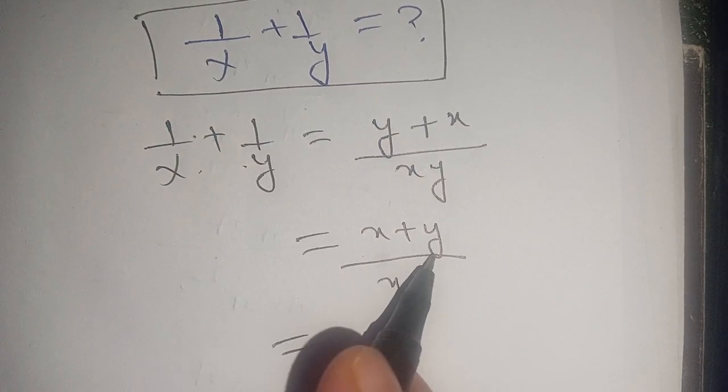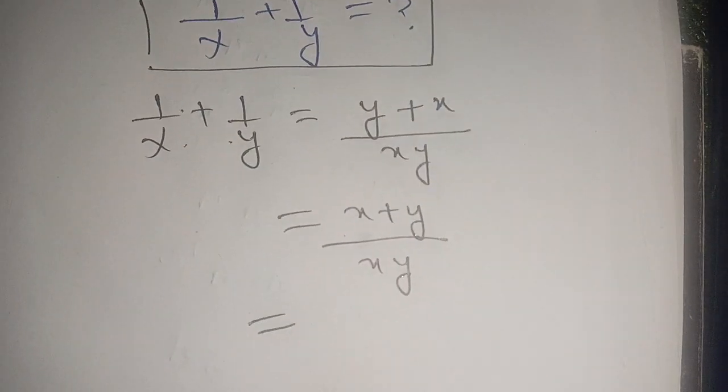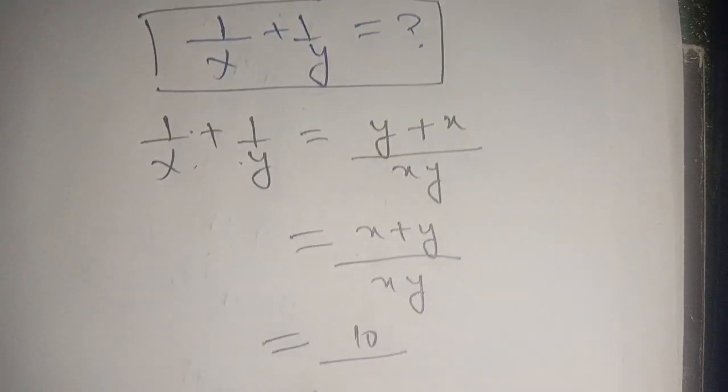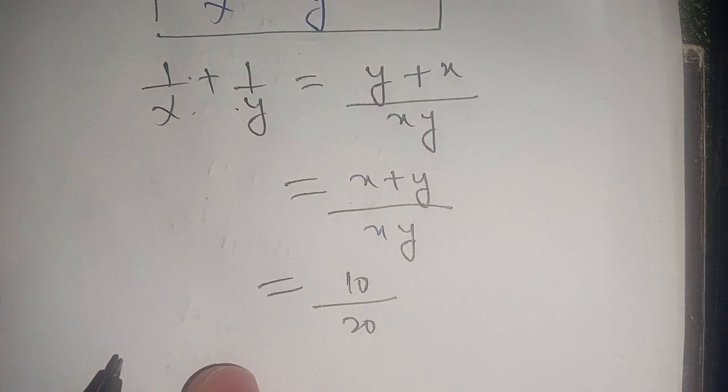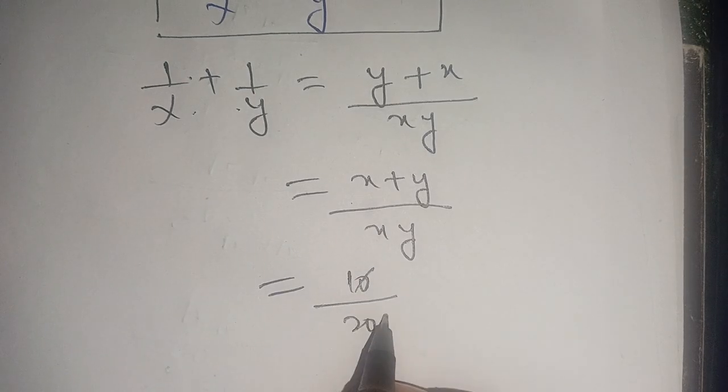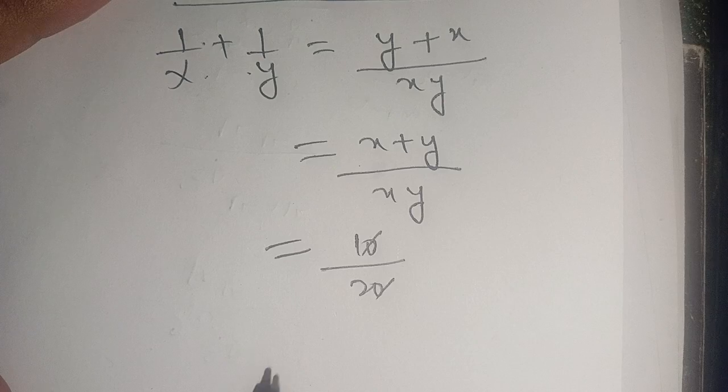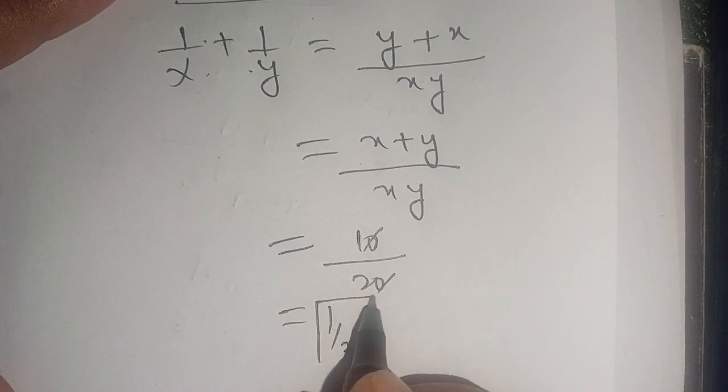We have x plus y - it is given that it equals 10 - divided by x times y, which equals 20. We can write this as 10 divided by 20. The zeros can be taken out, and we have remaining only 1 divided by 2.